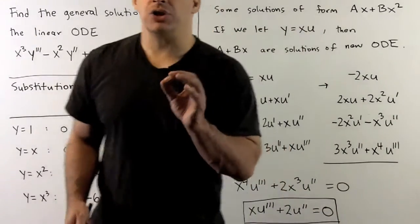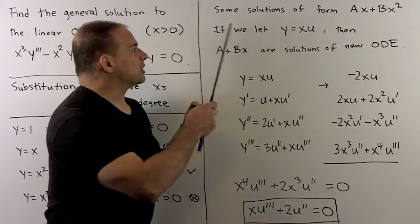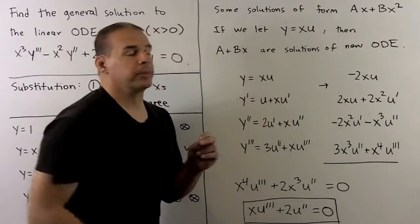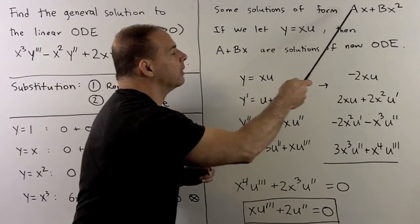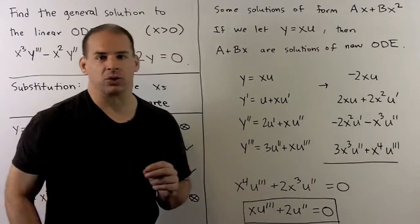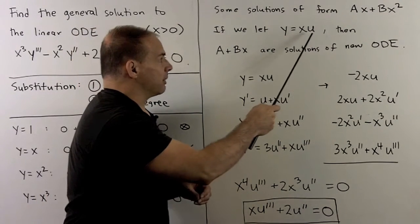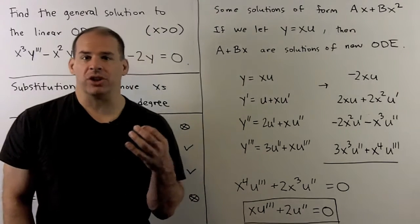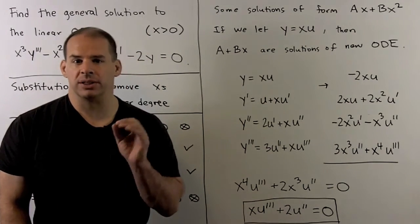This is actually very helpful, because I know that some of our solutions are in the form AX plus BX squared. It makes sense to pull an X out. So instead of looking for Y's that satisfy this equation, we're instead going to look for U's where Y is equal to X times U. That's going to change the original equation — we put X times U into it and see what happens.